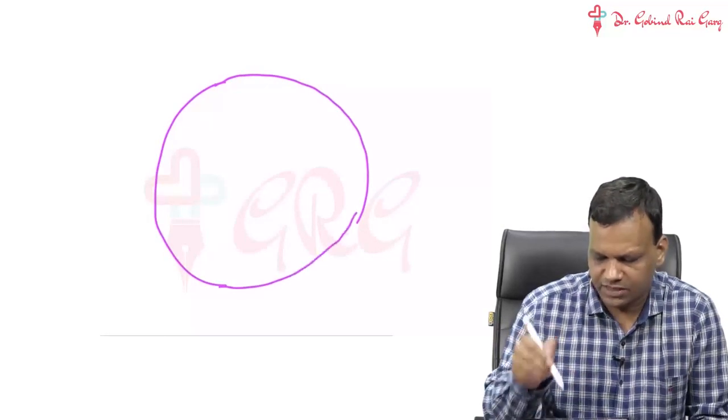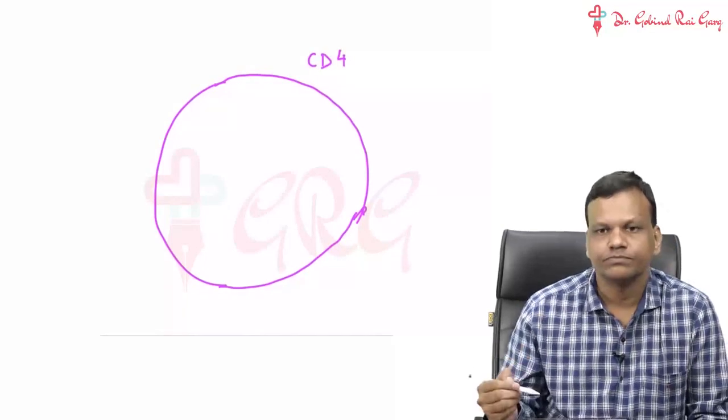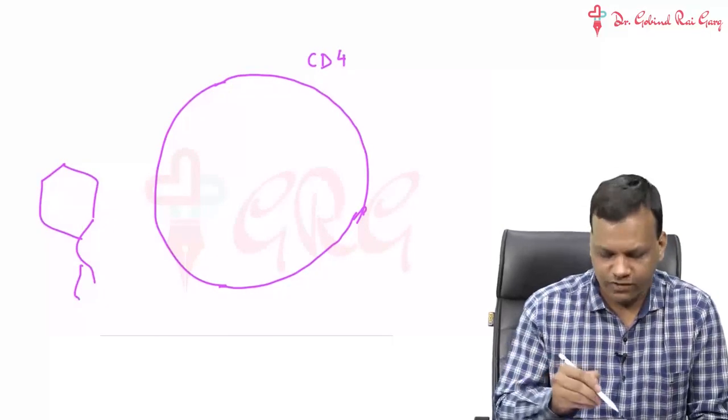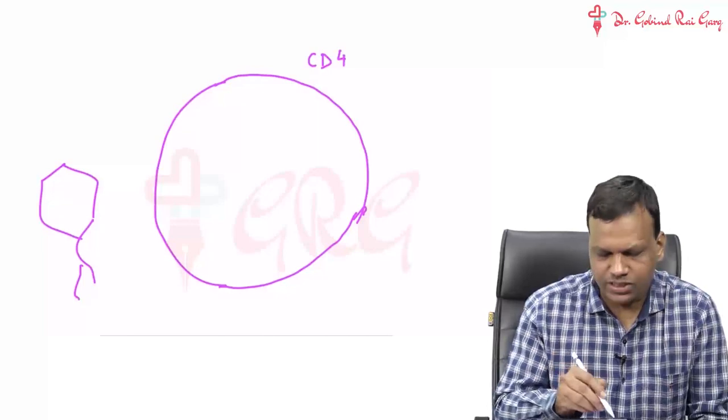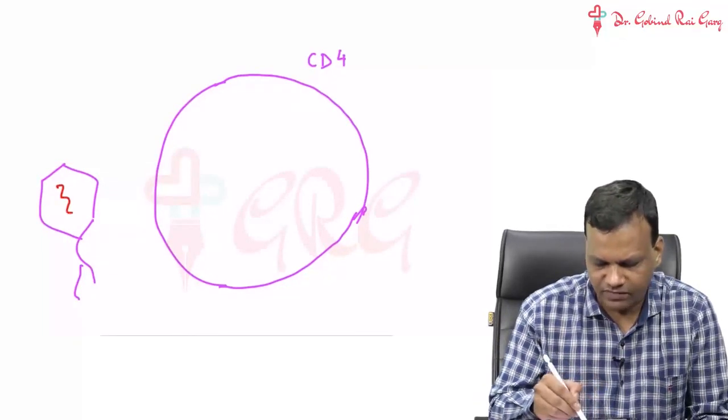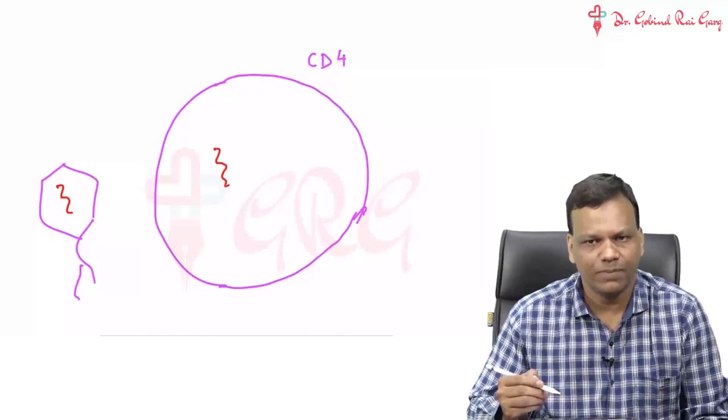This is a CD4 cell, this is HIV. First of all, the CD4 cell and HIV has to fuse, then the genetic material of HIV will go inside the CD4 cell, then the virus can replicate, multiply.